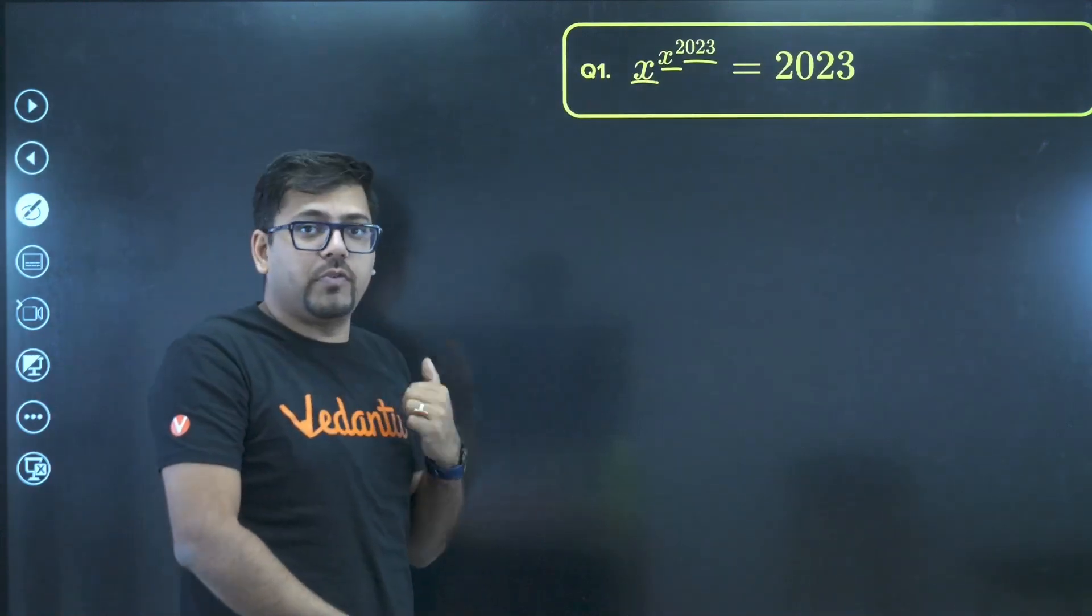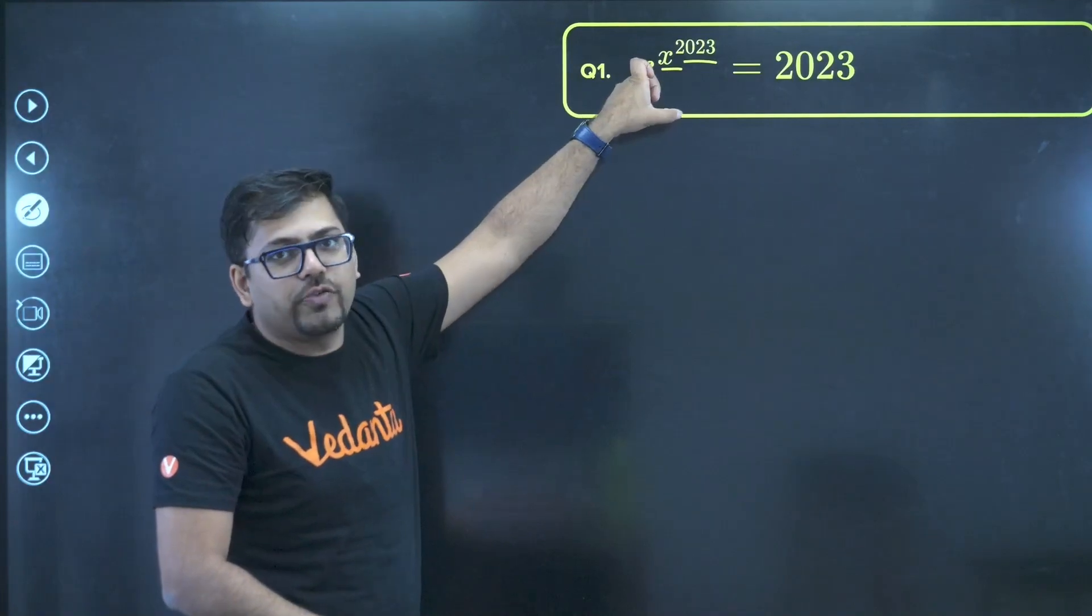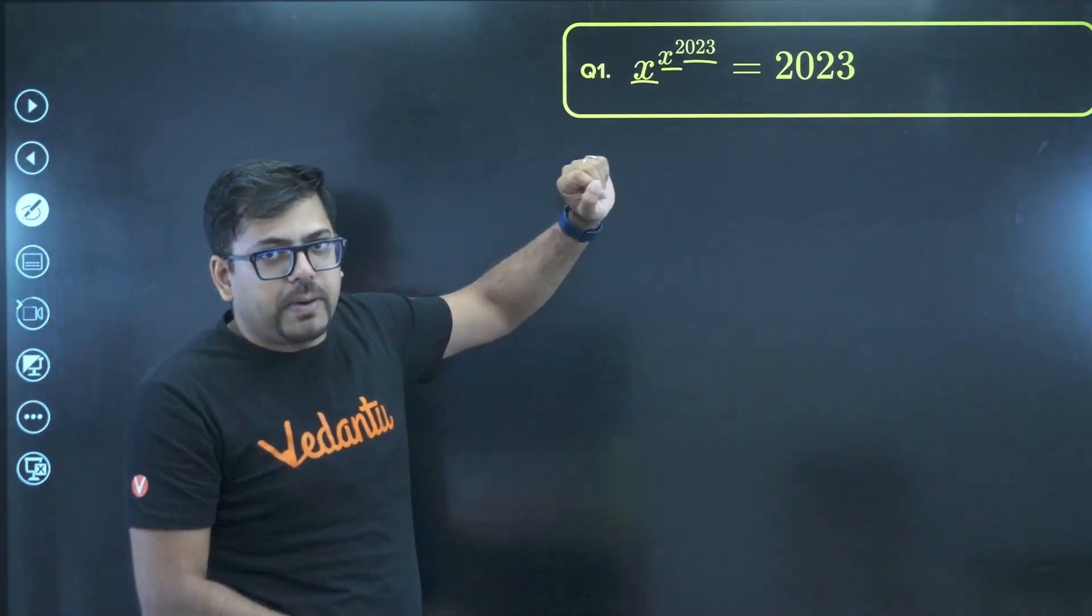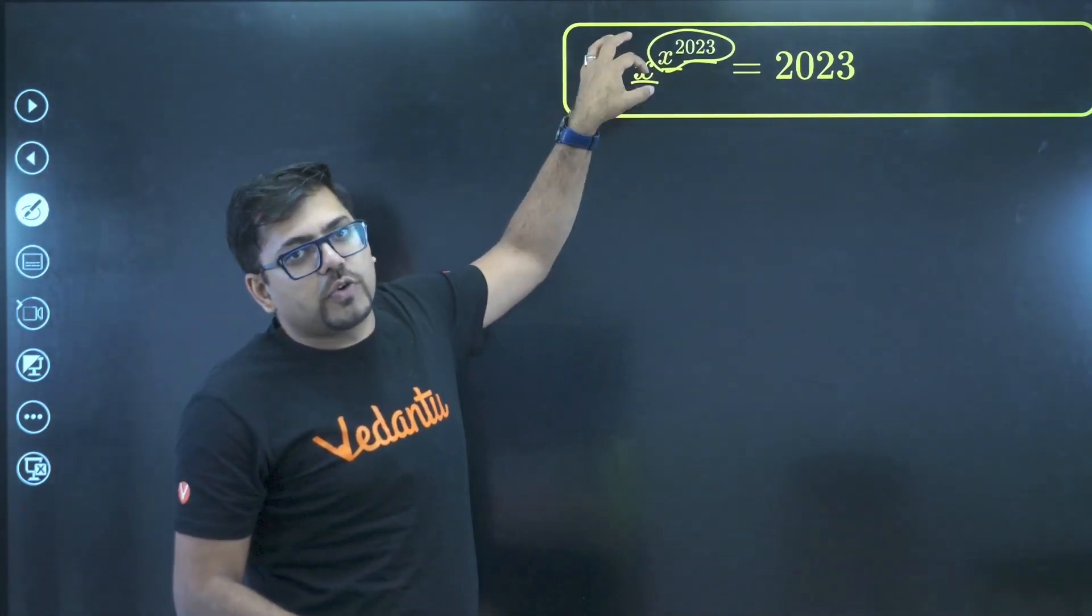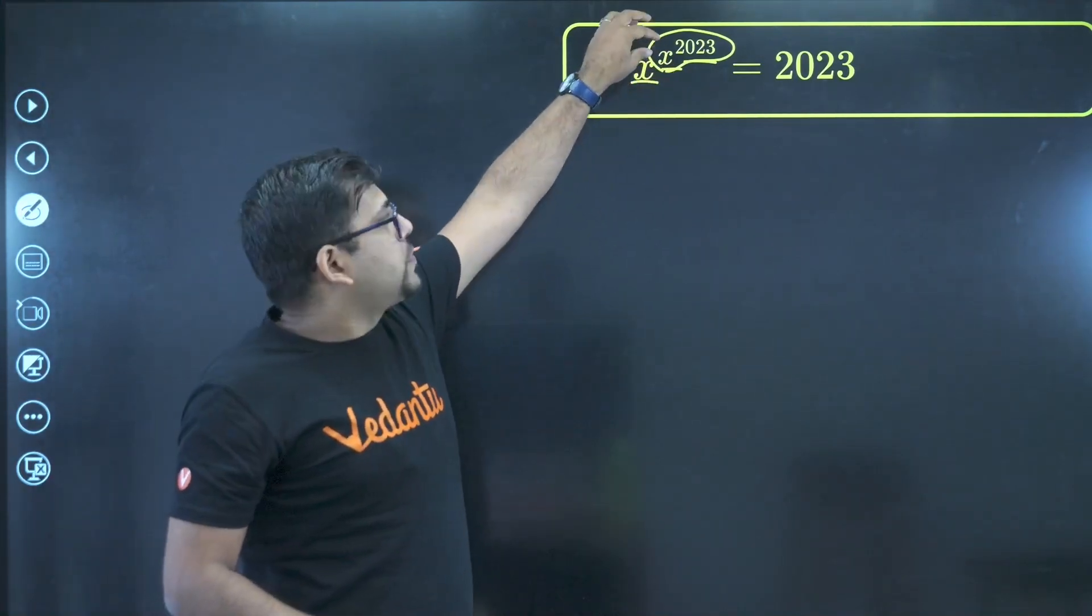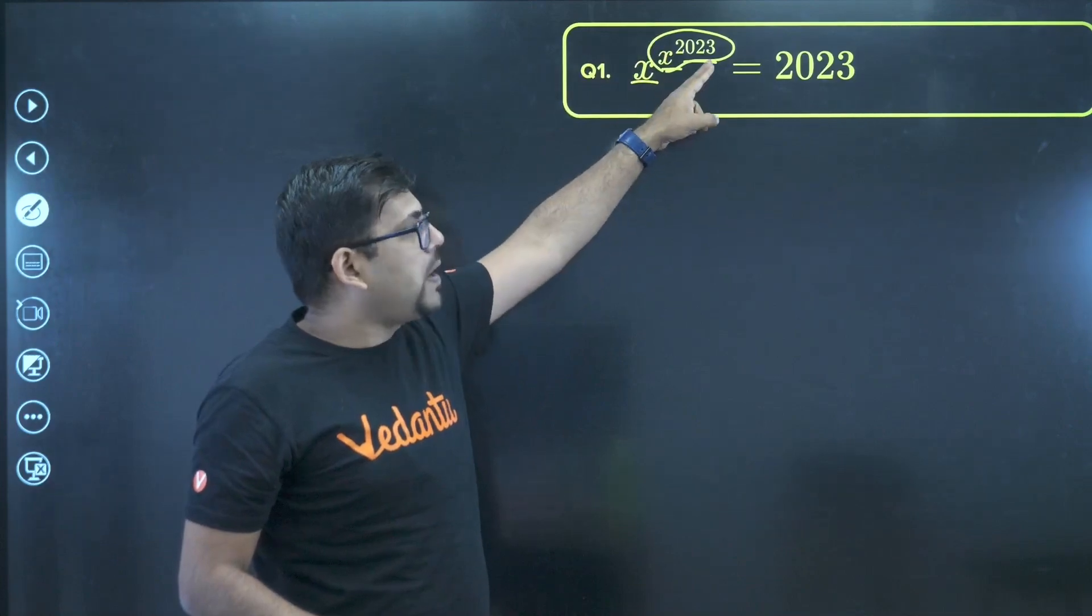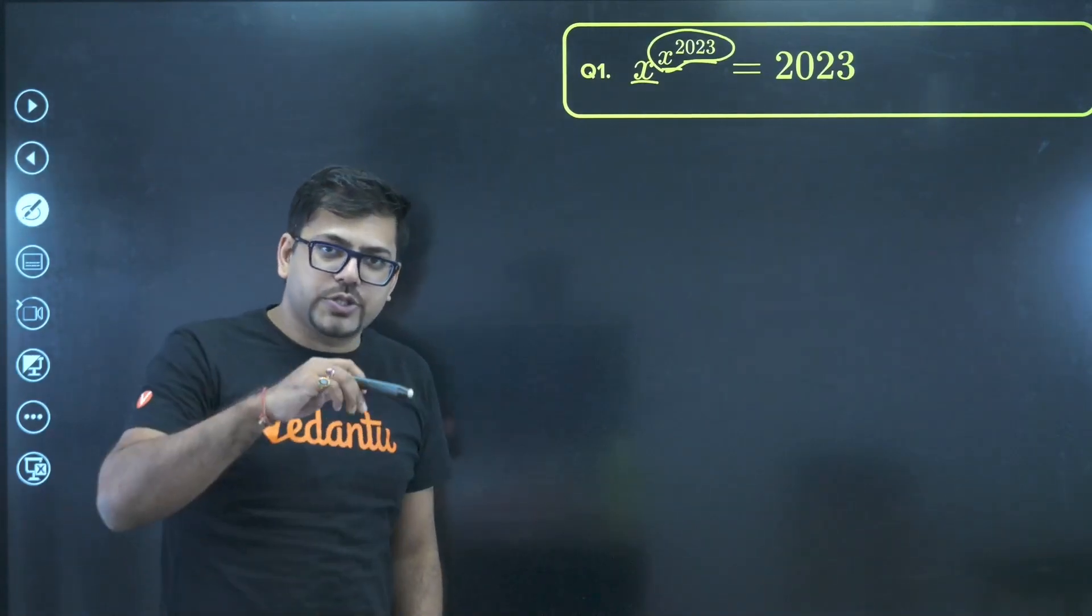Now here, we won't be able to in normal terms substitute some value for this or do anything for this. So what we can do, the problematic part is x raised to power 2023. If this would not have been here or if this would have been a very single number, probably we would have done something like x raised to power y. We would have done x equals 2023 and y equals 1, something of that sort. So first of all, let's do this thing only.